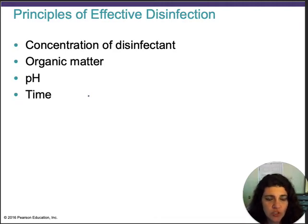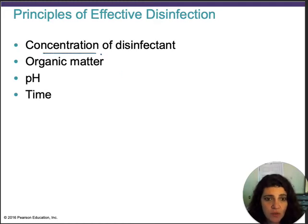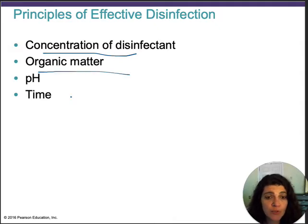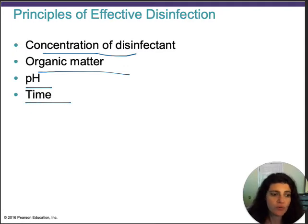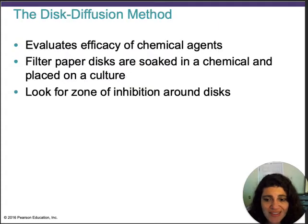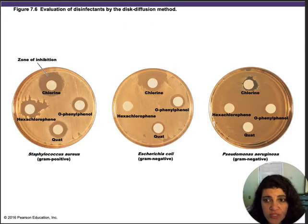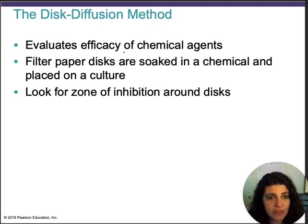Important factors when selecting an effective disinfectant method are the concentration of the substance, organic matter present, pH, and time. You need to consider all of these when selecting an agent. One method used for testing disinfectants is the disc diffusion method.